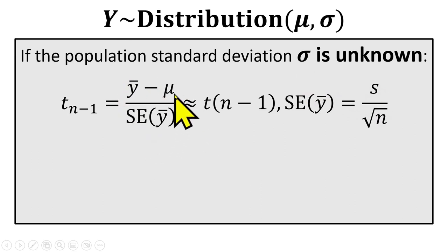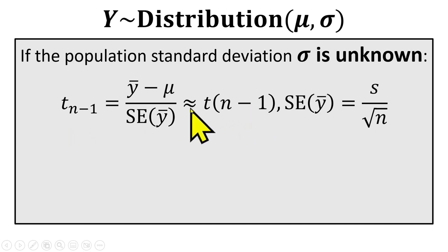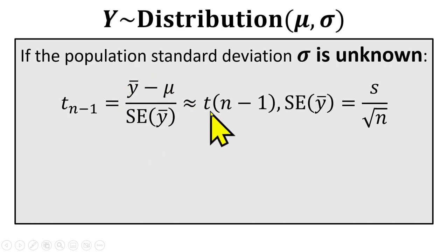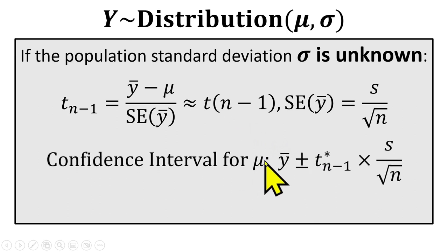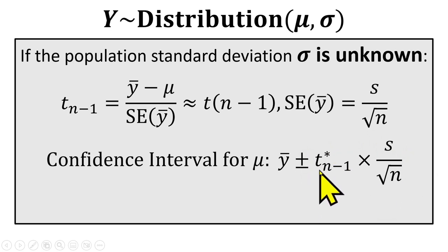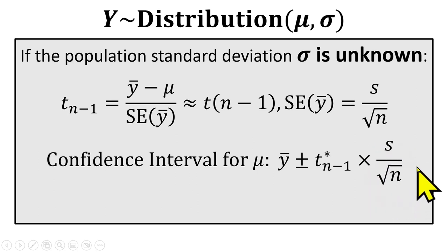When you do that, this value is no longer z. Instead, it follows a t-distribution with n minus 1 degrees of freedom in approximation. We need to appeal to the central limit theorem to say that this standardized value is approximately t in distribution. The confidence interval now — really the only difference is the margin of error. Instead of being a function of a z-score, it's a function of a t-score, a critical value for the given level of confidence, and instead of multiplying by the standard deviation of y-bar, it's the standard error of y-bar.